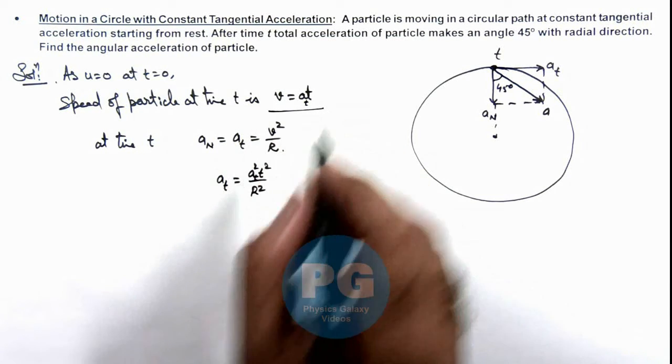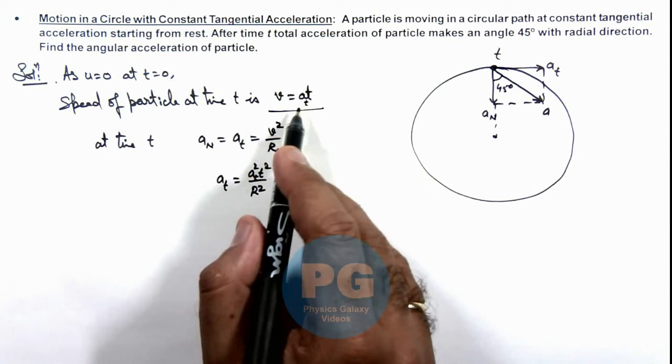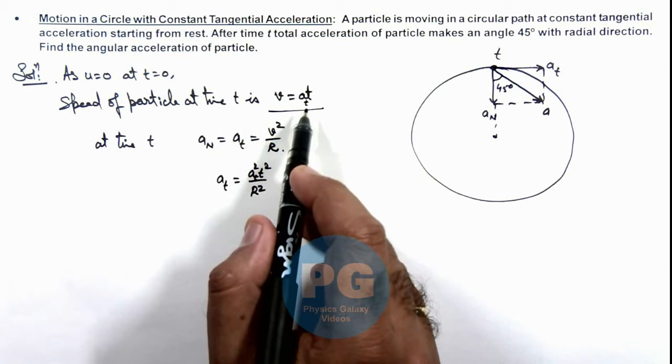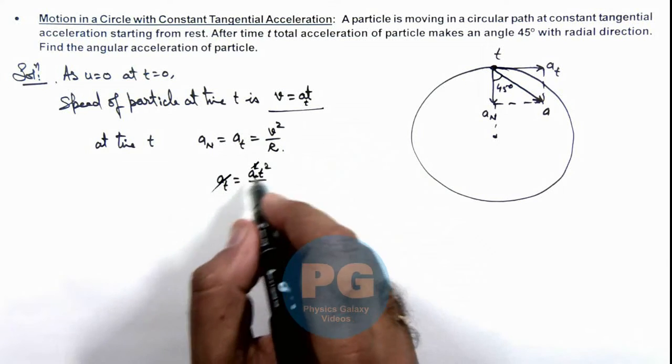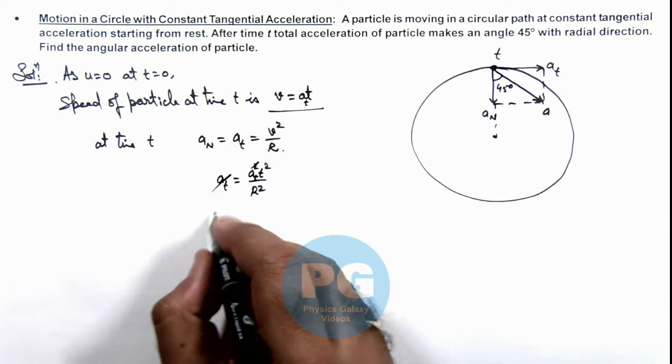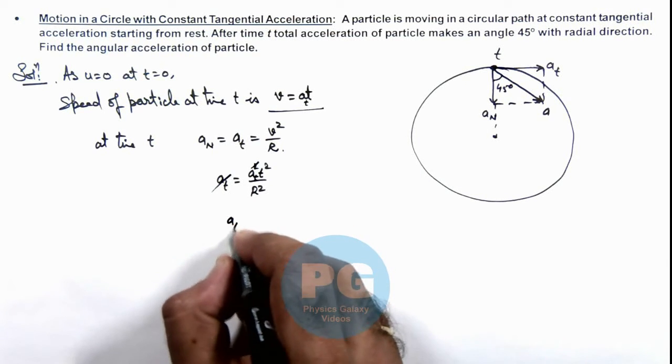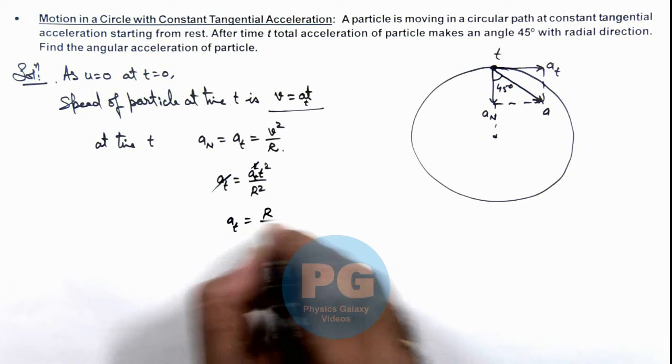Because the speed is governed only by the tangential acceleration, on further simplifying, ay*t gets cancelled out. The value of tangential acceleration we are getting is r/t².